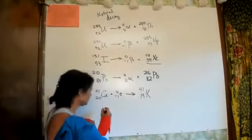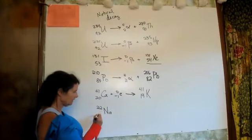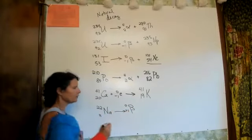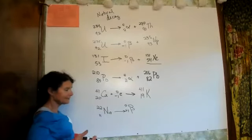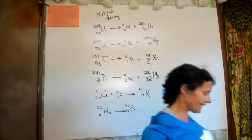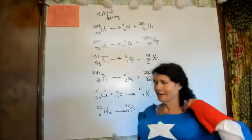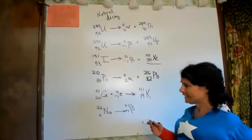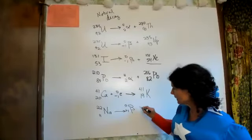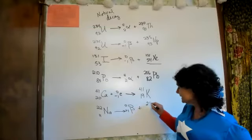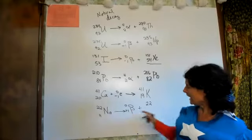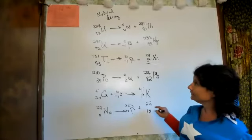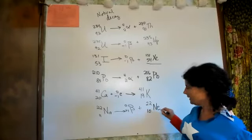Sodium-22 goes through positron emission. A positron is a beta particle that has a positive charge — they call it emission rather than decay. The mass doesn't change — only alpha decay changes the mass. Our atomic number would be 10, because positive one and 10 balances 11. Element number 10 is neon.